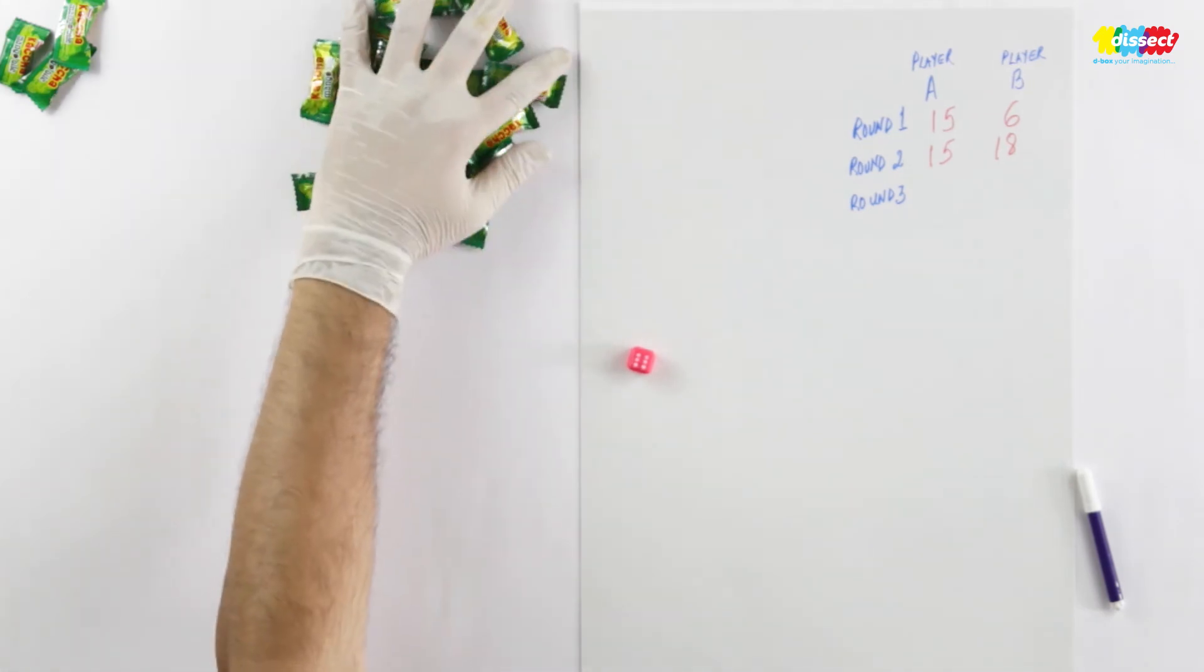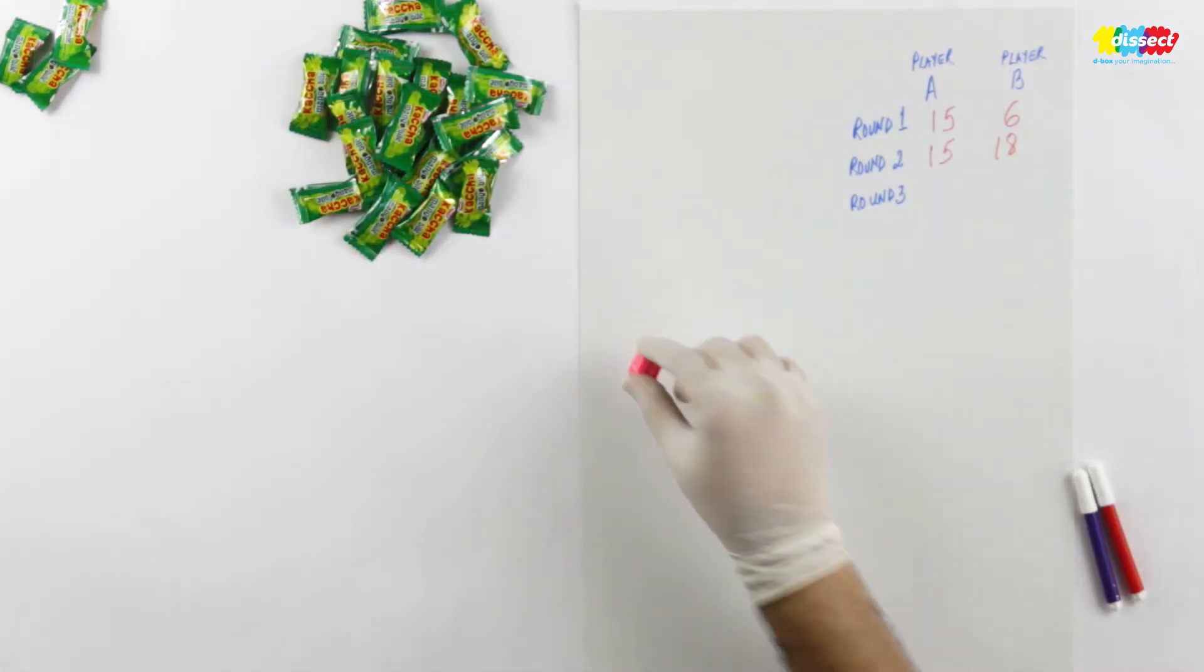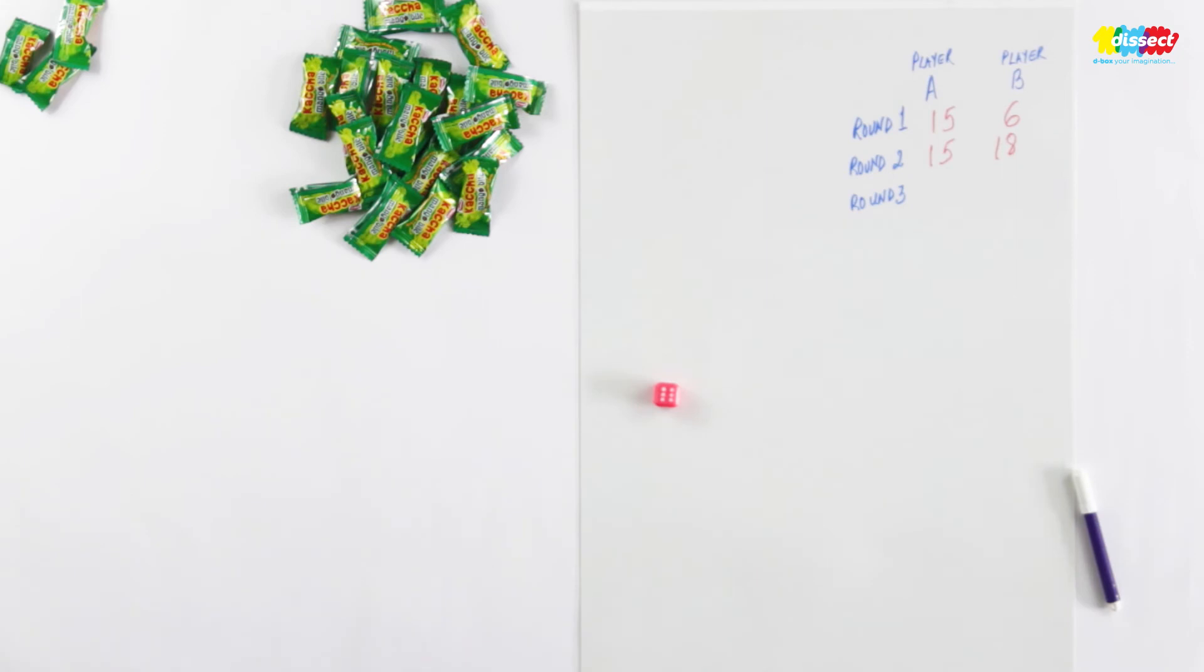We will put it again in the bank. And round 3 player A. So player A round 3, he has scored 18.